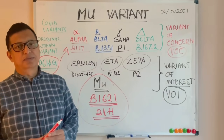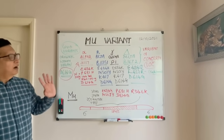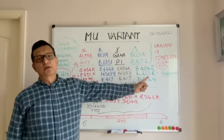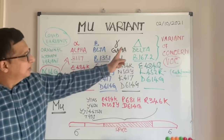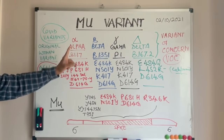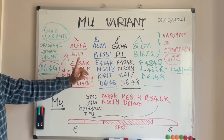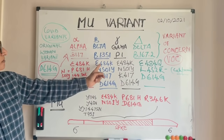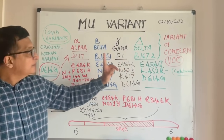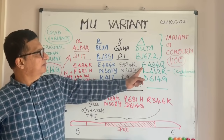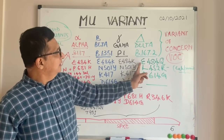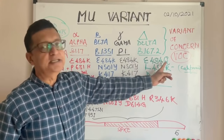Let's discuss the mu variant in detail. Among the variants of concern — Alpha, Beta, Gamma, Delta — let's examine their mutations. Alpha, Beta, and Gamma all carry the E484K mutation. Delta has a slight difference: instead of K at position 484, it is Q — so E484Q rather than E484K.